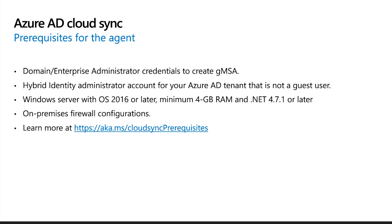There are a couple of prerequisites before we jump into the installation of the agent. You will need a domain or enterprise administrator credentials to set up an agent in your environment. These credentials will be used to create and configure the Group Managed Service Account or GMSA, which is used to run the Cloud Sync service. We will get more into GMSA on the next slide. You also need to be a hybrid identity or global administrator to manage the Cloud Sync configuration in the Azure portal. The server on which Cloud Sync agent is installed should be running Windows Server 2016 or greater with a minimum of 4GB of RAM and .NET Runtime version 4.7.1 or higher. These servers should be treated as a Tier 0 server based on the Active Directory administrative tier model. Also, any on-premises firewall configuration needed to enable the agent to communicate with Azure Active Directory — more instructions can be found by following the link on the screen.